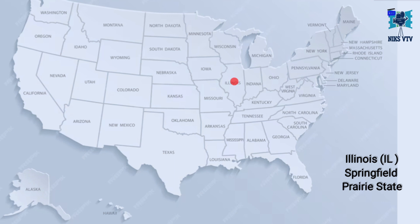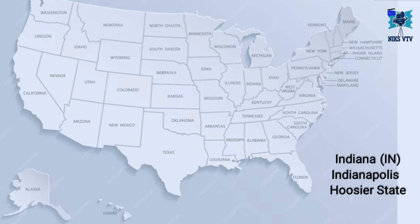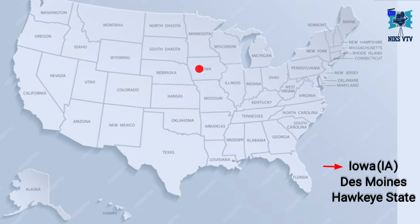Next state is Illinois, abbreviation is IL, capital is Springfield, time zone is Central Time Zone — CST — and its nickname is Prairie State. Next is Indiana, abbreviation is IN, its capital is Indianapolis, its time zone is EST, and its nickname is Hoosier State. Next state is Iowa, its abbreviation is IA, its capital is Des Moines, and its time zone is CST, and its nickname is Hawkeye State.